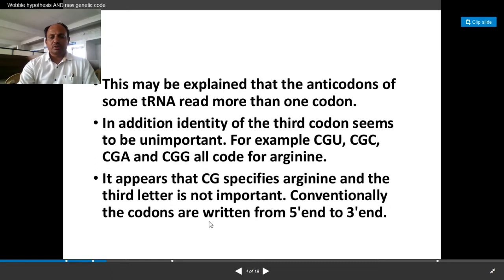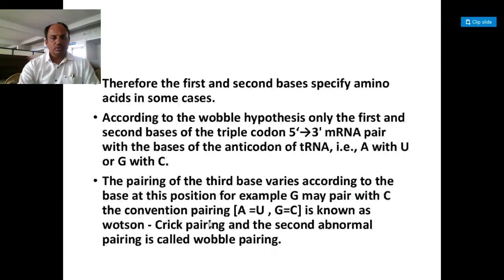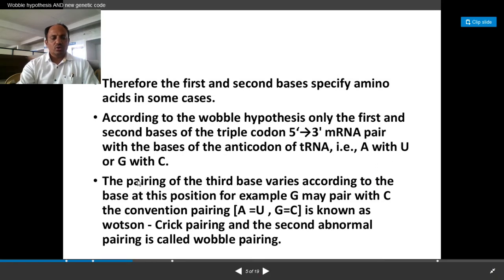So conventionally, the codons are written from 5 prime end to the 3 prime end of the messenger RNA molecule. Therefore, it is observed that the first and second bases, or nucleotides, specify the amino acids in some cases. So what is known as the wobble hypothesis here? According to the wobble hypothesis, only the first and the second bases of that codon pair with the bases of the anticodon of the tRNA molecule — that is, adenine with uracil or guanine with cytosine.